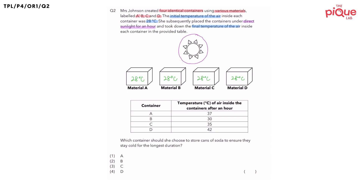I want you guys to now focus on the provided table below. For all of these four containers, what happened to the final temperature of the air inside the containers after an hour? Did they increase or decrease? They increased, correct? Because the initial temperature was 28 degrees Celsius, and all four final temperatures of the air are now higher than 28 degrees Celsius. The reason is that the air inside the containers had gained heat — from the sun.